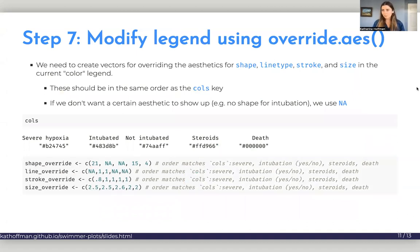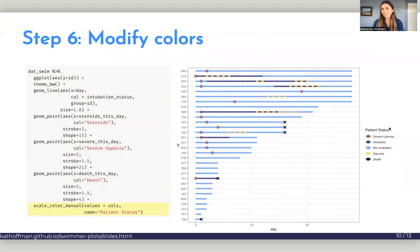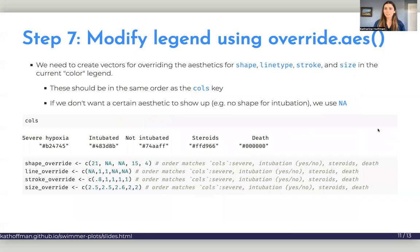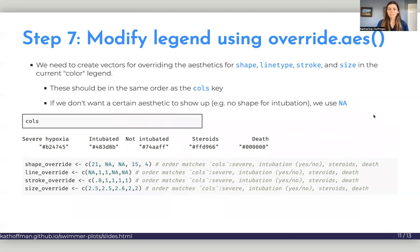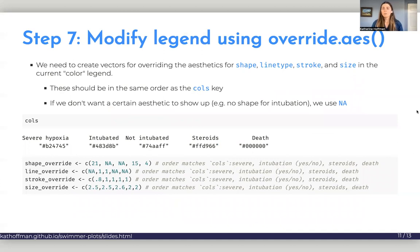The last thing that we need to do to this plot is you'll notice that it's still just a legend for color, and it's not reflecting like I have a black X for death, not just a black line with a square on it. So we need to modify this legend using override.aes. And override.aes stands for override aesthetic, and that can be used, well you'll see, but it's in one of the guides layers that you can add for ggplot.